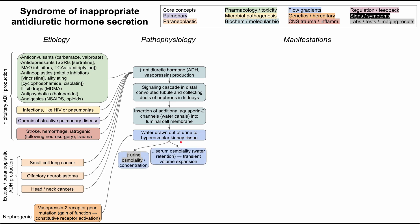The result of having many aquaporin-2 channels is that water is drawn out of the kidneys, so the serum and the rest of the body end up with a very low osmolality. The urine itself ends up with a very high osmolality — the urine is concentrated while the rest of the body is diluted. You'll also have water expansion in the rest of the body because you're retaining water from the urine.